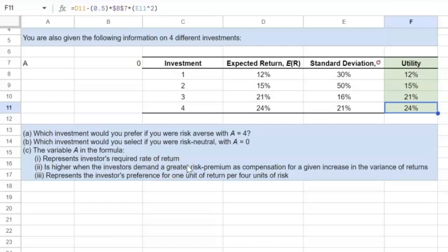which means that for a given level of risk, they would need to be compensated with a much higher rate of return or risk premium, if you will.